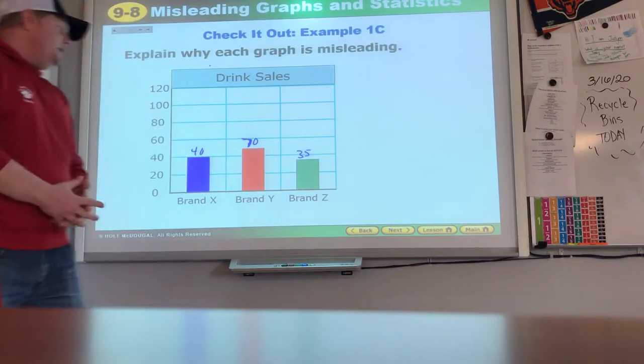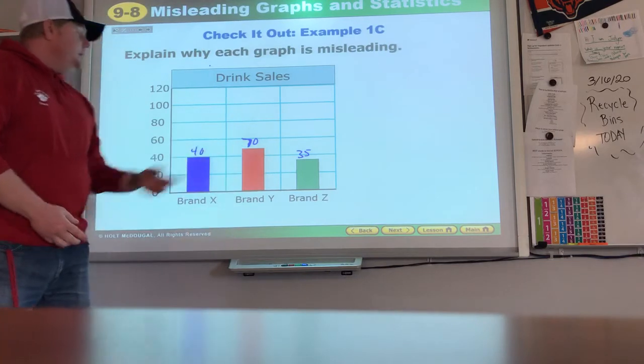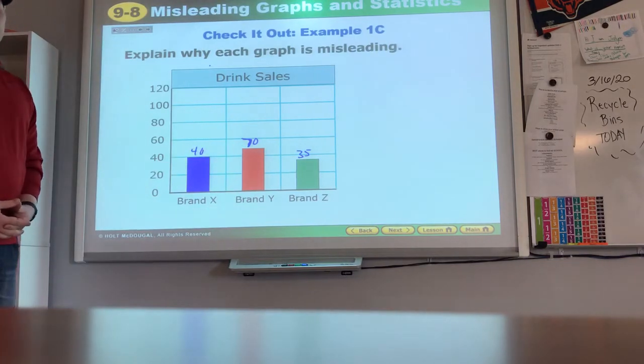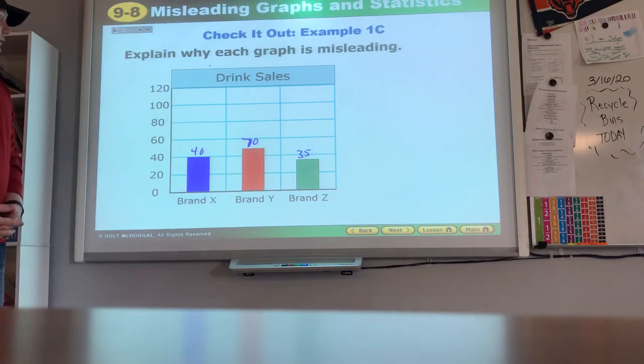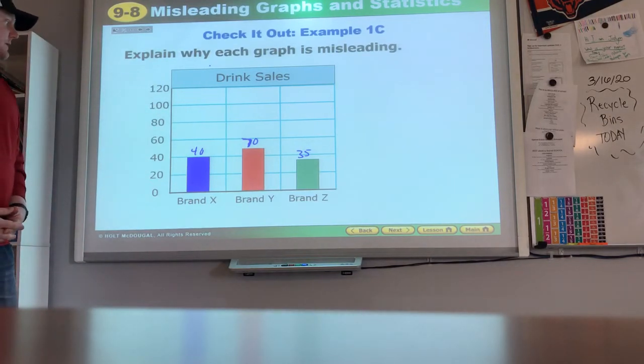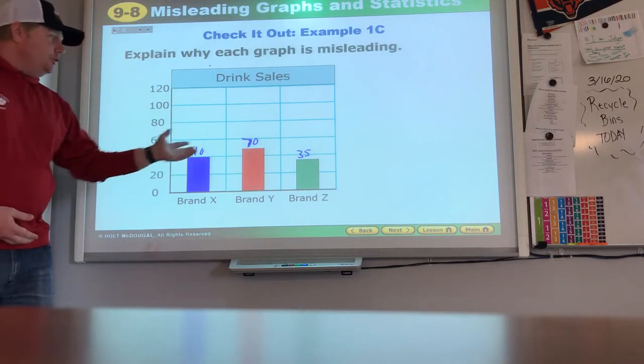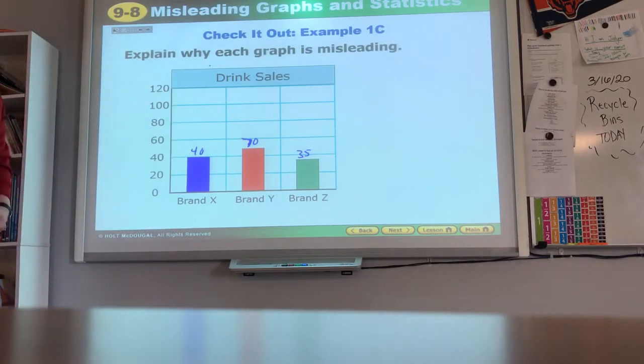That is a 70, 40, and 35. We can see that brand Y actually sold significantly more than brand X and was double that of brand Z. Brand Y has much more in sales, but because of the way they presented the graphs with the 20 in each increment, it doesn't look like a big difference.